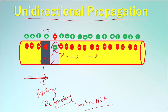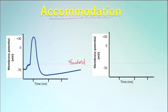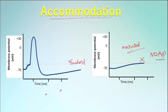The inactivation of ion channels also explains another phenomenon called accommodation. When a membrane is quickly depolarized, say by 15 millivolts, it reaches the threshold and an action potential is elicited. But if it is depolarized slowly over a prolonged period by the same magnitude of 15 millivolts, the membrane will not elicit an action potential. This is because the voltage-gated sodium channels have undergone inactivation.